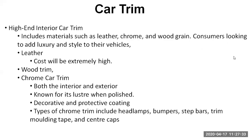As an automobile engineer, it is essential to understand what trims are good to add for aesthetics and what trims should be avoided because they can hamper performance. Types of chrome trims may include headlamps, bumpers, step bars, and quick moulding tape or fender caps. They are decorative and also provide a protective coating — chrome plating on a metallic body adds to its life by avoiding rusting.